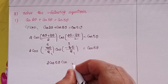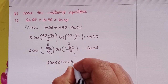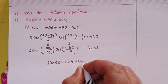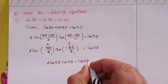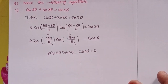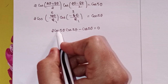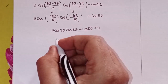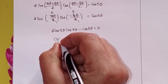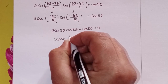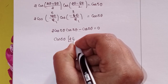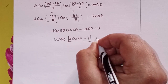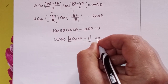Since cos(-θ) = cosθ, we have cos(-3θ) = cos3θ. Moving cos5θ to the left side, we get 2·cos5θ·cos3θ minus cos5θ equals 0. Taking cos5θ common: cos5θ·(2cos3θ - 1) equals 0.